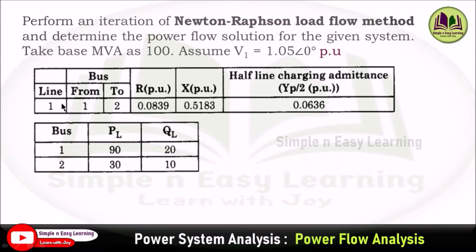Consider this table. There is only one line present in this problem, connected between bus 1 and bus 2. The resistance and reactances are given in per unit, and the half line charging admittances YP divided by 2 is also given in per unit. The load power values for both buses are specified: PL equal to 90 and QL equal to 20 for bus 1, and PL equal to 30 and QL equal to 10 for bus 2.